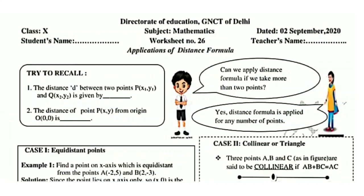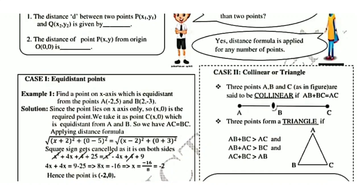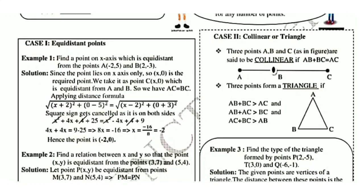Case 1: Equidistant points. We have two examples. Example 1: Find a point on the x-axis which is equidistant from the points A(−2, 5) and B(2, −3). Since the point lies on the x-axis, its coordinates will be (x, 0). We take it as point C(x, 0) which is equidistant from A and B, so AC equals BC. Applying the distance formula: under root of (x2 minus x1) squared plus (y2 minus y1) squared.